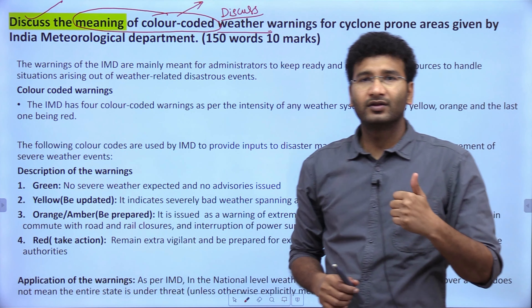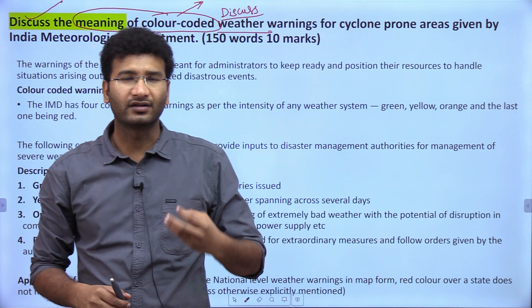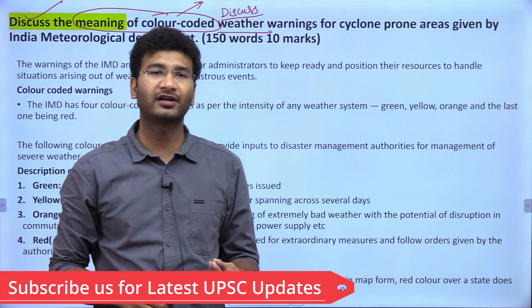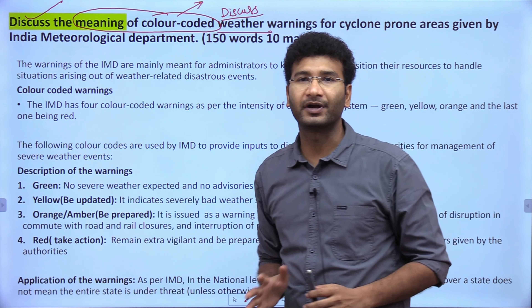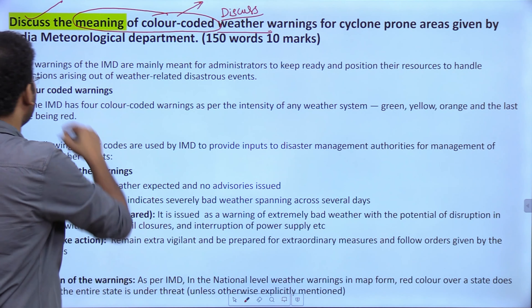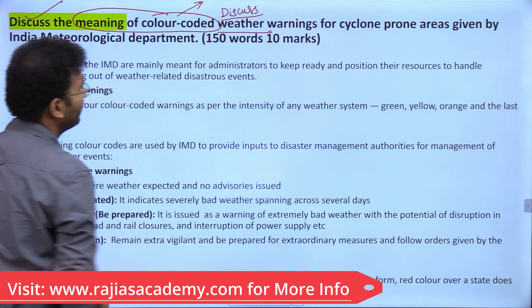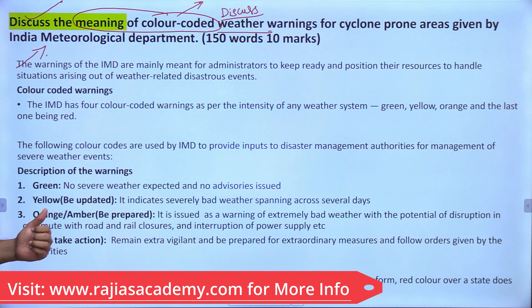In the introduction, mention that IMD warnings are administered to keep the administrative mechanism well prepared. Then come to the color coding parts. The color coding consists of 4 different colors. Green color means no severe weather — no adverse issues expected — but the government can still take prior recommendations from various departments to handle an upcoming cyclone.